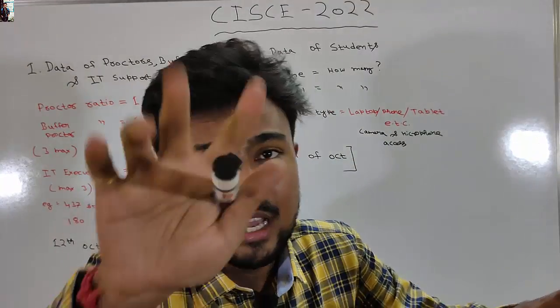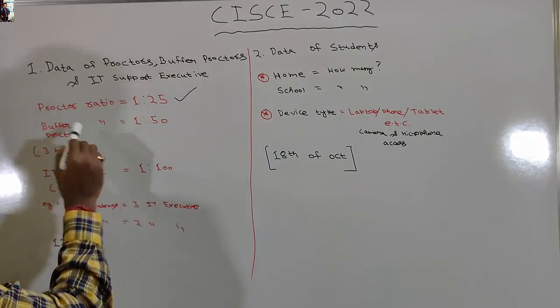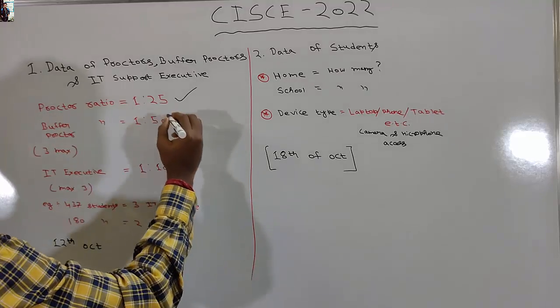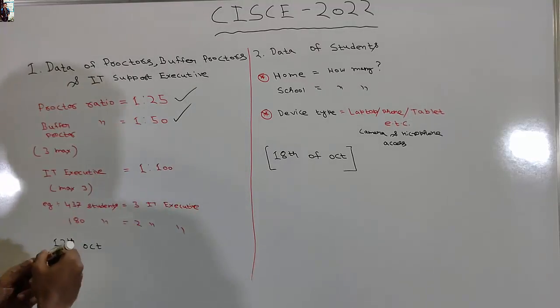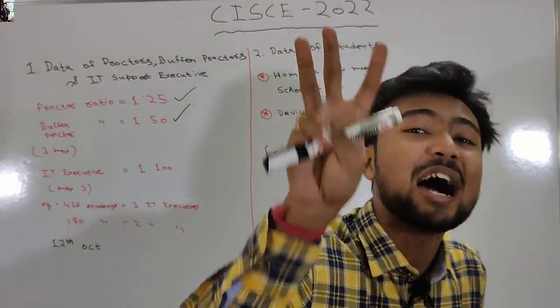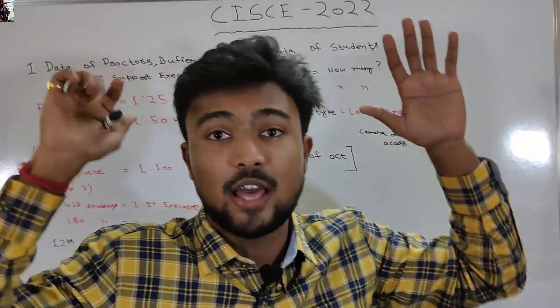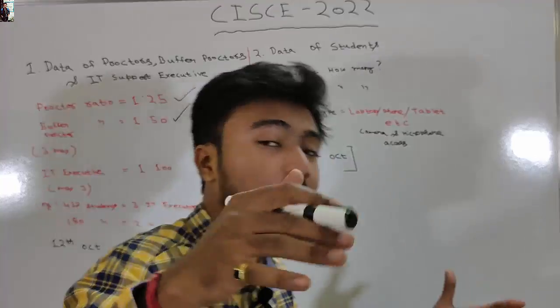Number two: what is a buffer proctor? For every 50 students, there is one buffer proctor, and a school can have a maximum of three buffer proctors at any given time. This is a very important point to note.